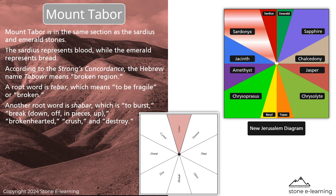A root word tabar means 'to be fragile or broken.' Another root word shabar means to burst, break down, off, in pieces, up — brokenhearted, crush, and destroy.